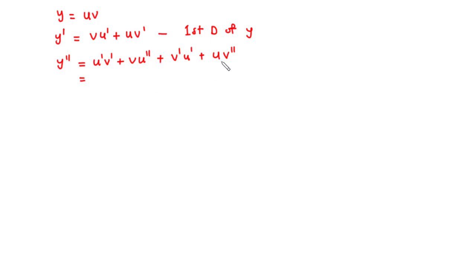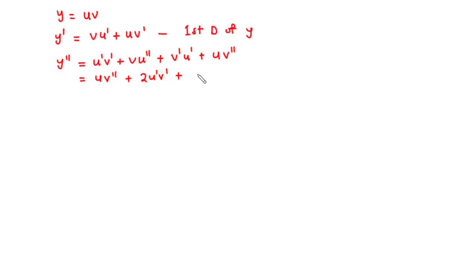Continuing, we hold u and differentiate v prime to get v double prime. Simplifying, we get u·v double prime plus u prime·v prime plus v prime·u prime plus u double prime·v. Since u prime·v prime appears twice and multiplication is commutative, we combine them to get: y double prime equals u·v'' plus 2u'v' plus u''·v. This is the second derivative of y.